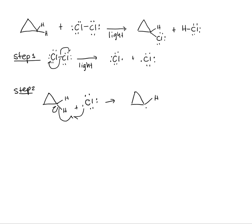This gives us H plus HCl. That carbon on the right is now the radical, and the radical chlorine has become HCl.